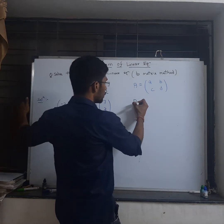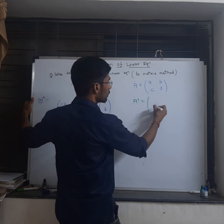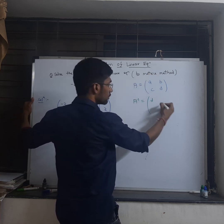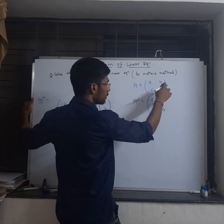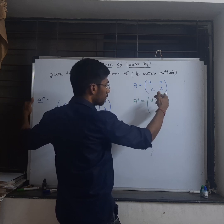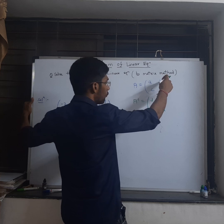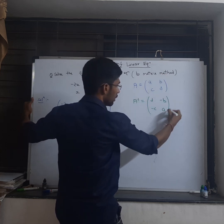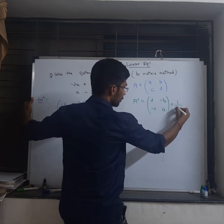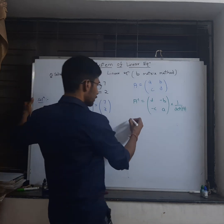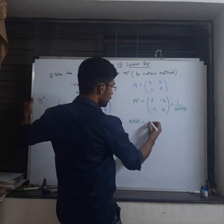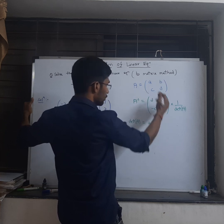I have to exchange the principal diagonal elements and multiply minus sign to the off diagonal elements, minus b and minus c. And I have another factor which is determinant of A. The determinant of A is given by a times d minus b times c.